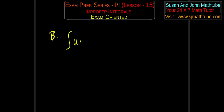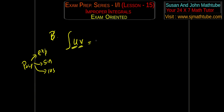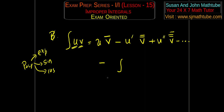Suppose you have the integral of u times v. This works perfectly if the first function is a polynomial and the second can be exponential, sine, or cosine. The rule goes: u·v̄ − u′·v̄̄ + u″·v̄̄̄ − ... where bar stands for integration and dash stands for derivative.